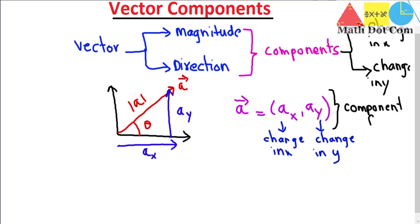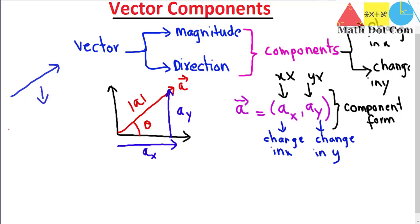Keep in mind that this form is different from how we usually write coordinates, like (2, 3), where 2 represents x and 3 represents y. Here it is not the same — you cannot say Ax is the value of x in the coordinate axis. These are the change in x and change in y values. So if I have a vector and convert it into component form, I get its x and y components, telling us how much it is changing in the x direction and how much it is changing in the y direction.